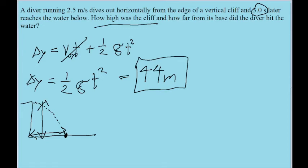If we're looking at horizontal motion, there is not going to be any acceleration in that direction. Remember, the only acceleration happening here is the acceleration due to gravity, and that only acts vertically. So because gravity only acts vertically, the diver's horizontal velocity — which in this case is 2.5 meters per second — can be treated as constant. Their initial speed in the x direction is the same as their final speed in the x direction.